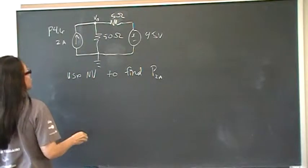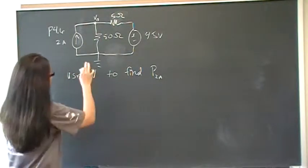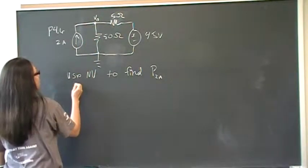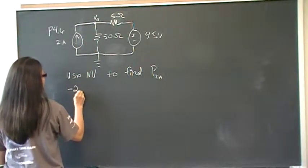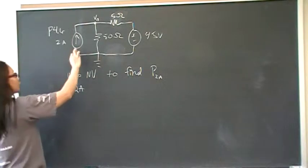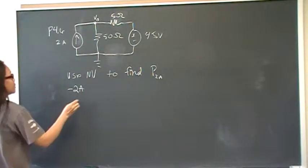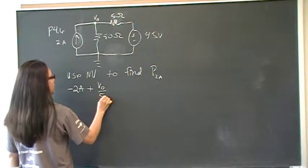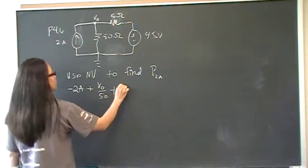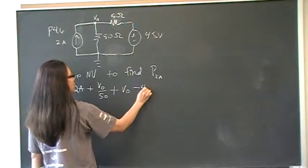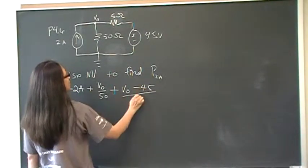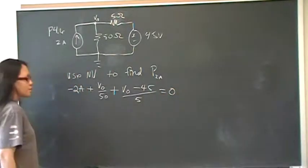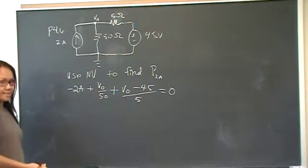Okay, so then the node voltage at V0 is going to be minus 2 amps. Remember, current going into a node is negative, defined to be negative, plus V0 over 50, plus V0 minus 45, over 5, is equal to 0. So, this is all the node voltage method is, is KCL.